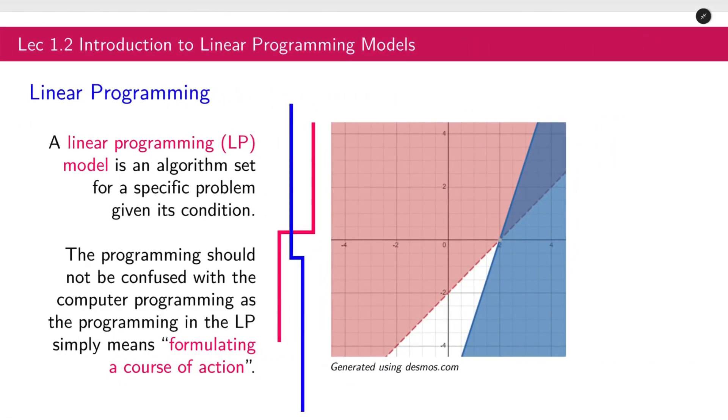A linear programming or LP model is an algorithm set for a specific problem given its condition. The programming should not be confused with computer programming as the programming in LP simply means formulating a course of action. You're trying to do a program, a course of action.